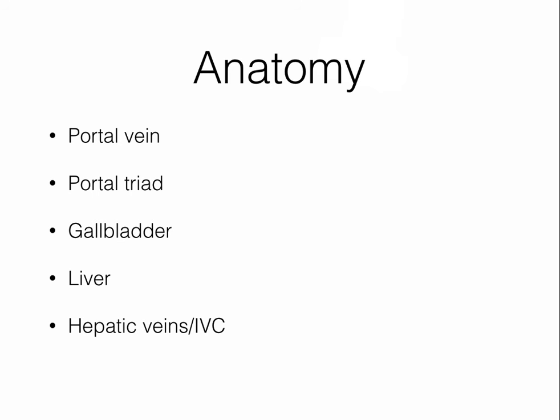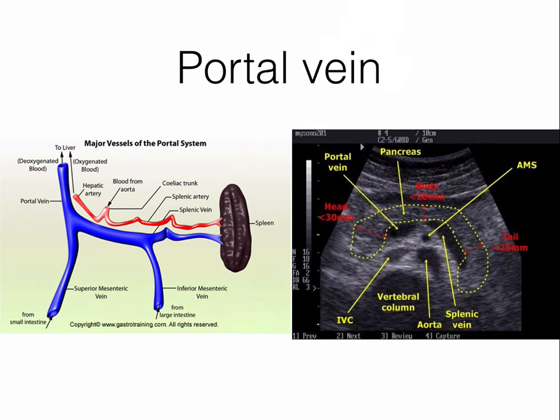Let's now review the relevant anatomy. We'll identify the portal vein, portal triad, gallbladder, liver, as well as the hepatic veins and the inferior vena cava. The portal vein is composed of the splenic vein coming from the patient's left, and the inferior and superior mesenteric veins coming inferiorly.